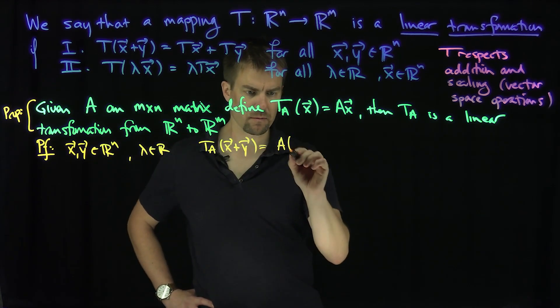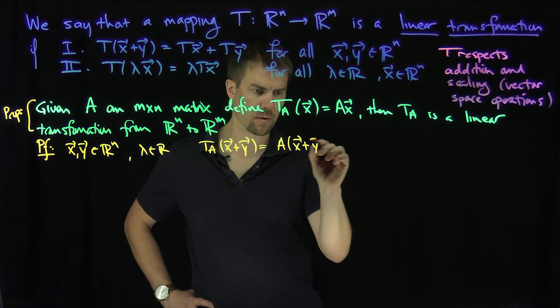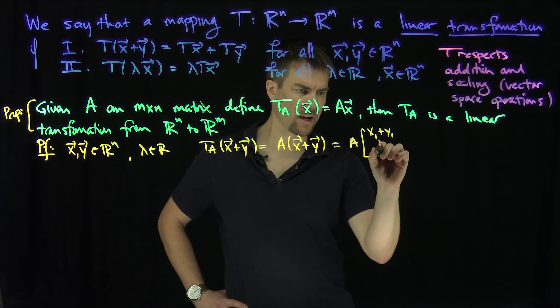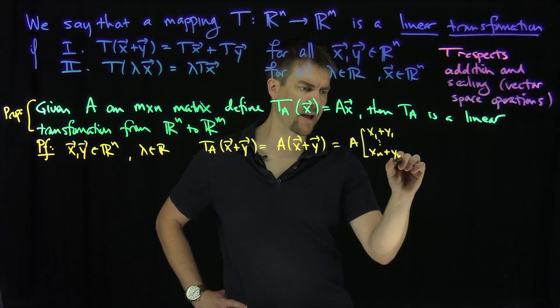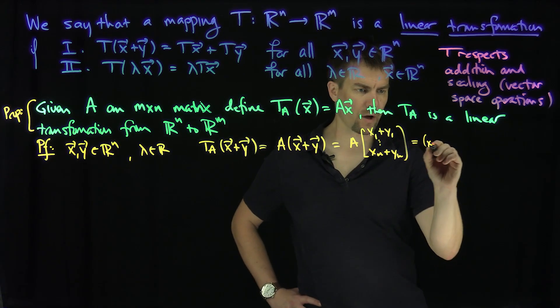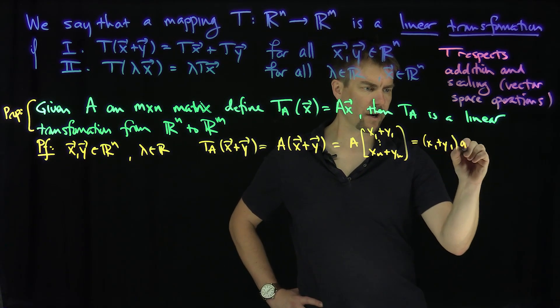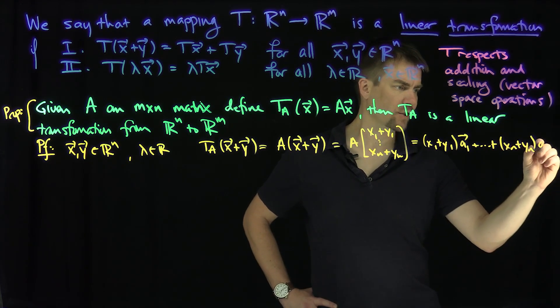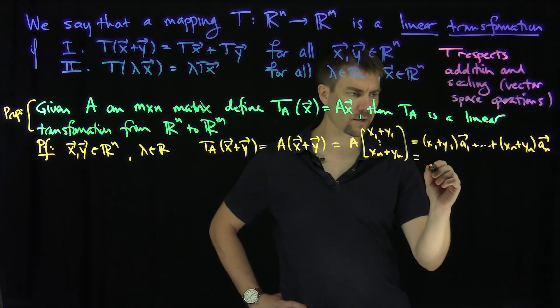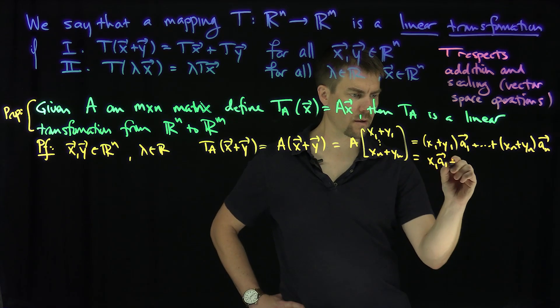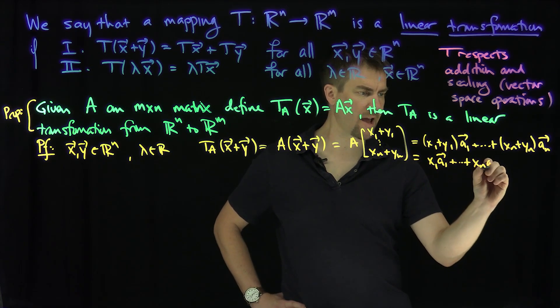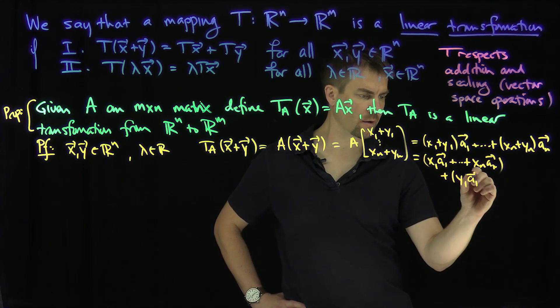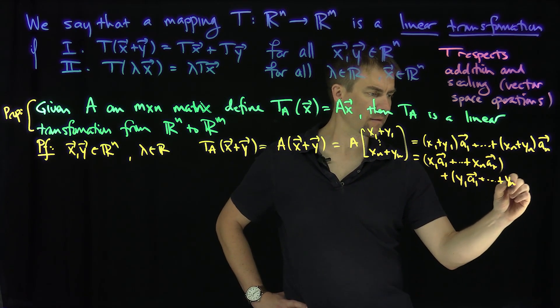Well, that's just A of x plus y, which is just A of x_1 plus y_1 all the way down to x_n plus y_n. And that's just x_1 plus y_1 in the direction of column A_1 all the way down to x_n plus y_n in the direction of column A_n. And of course, we're going to break this up as x_1 A_1 plus x_n A_n plus y_1 A_1 y_n A_n.